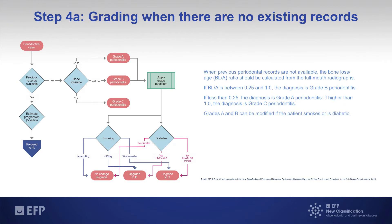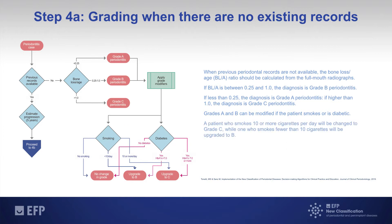Grades A and B can be modified if the patient has clear risk factors — that is, if the patient smokes or is an uncompensated diabetic patient. When the patient smokes 10 or more cigarettes per day, this will upgrade grades A and B to grade C, while smoking fewer than 10 cigarettes will keep the patient maintained in grade B or grade A.